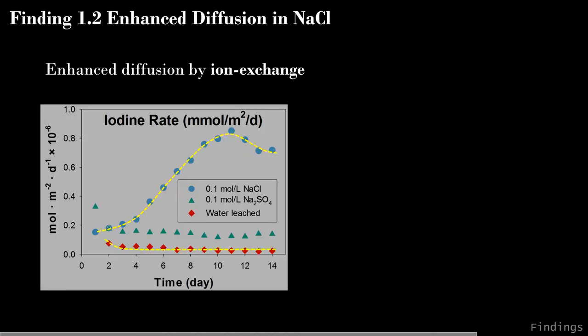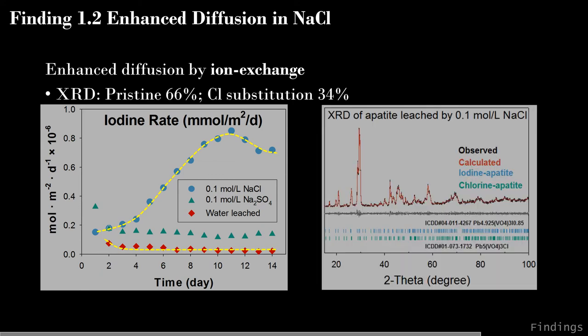In sodium chloride solution, the iodine diffusion rate was significantly enhanced by rapid ion exchange between chloride and iodide. Iodine release rates were continuously increasing, nearly one order of magnitude higher than water leaching under the same conditions. XRD analysis identified the original pristine phase and a new phase—chlorapatite, a chlorine version of apatite—confirming the substitution of iodide by chloride.